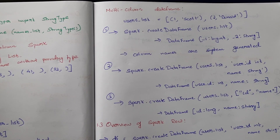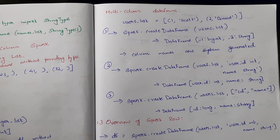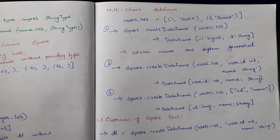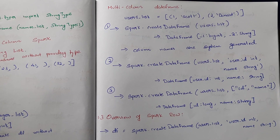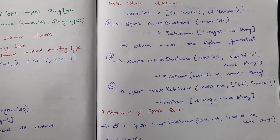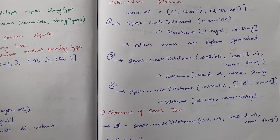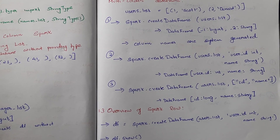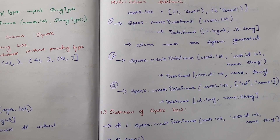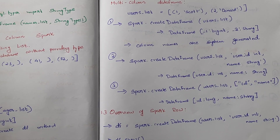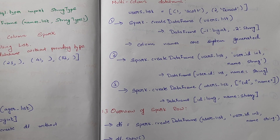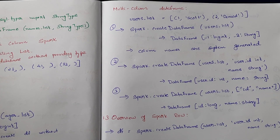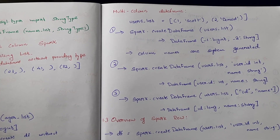Now we'll see how to create a multi-column DataFrame. We'll have a users list which is a list of tuples — for example, (1, 'Scott'), (2, 'Donald'), and so on. If we call spark.createDataFrame(users_list), it will automatically create a DataFrame with a default schema: column _1 with type bigint and column _2 with type string.